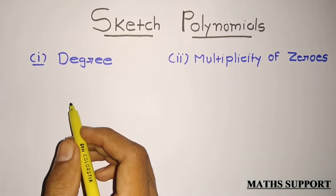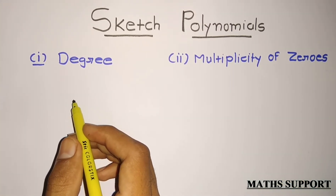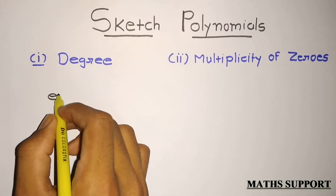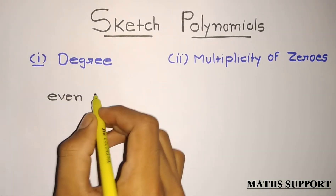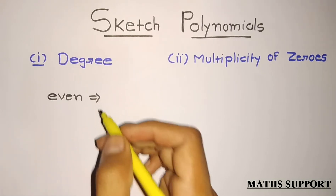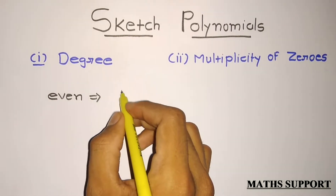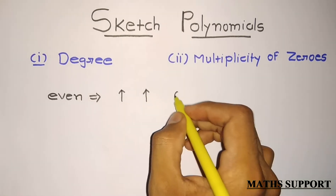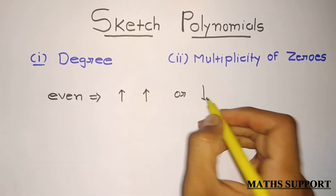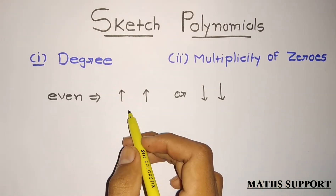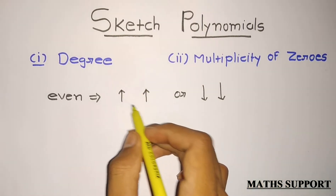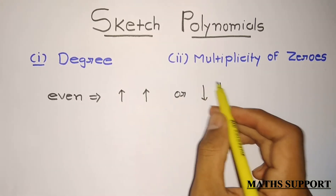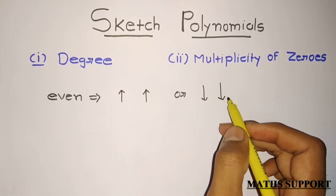Now, how to define any polynomial's endpoints with the help of degree. There are two natures of degree: one is even. If your degree is even, then your ends of the polynomial will be like this — either both ends are upward or both ends are downward. That depends upon the leading coefficient. If your leading coefficient is positive, then both ends will be upward. If negative, then both ends will be downward.